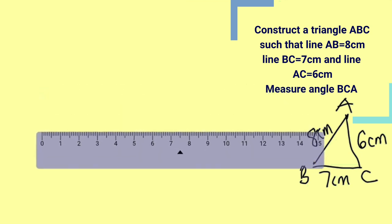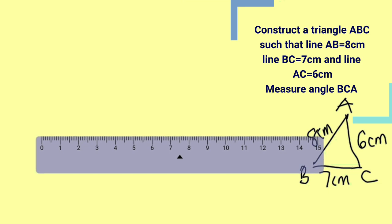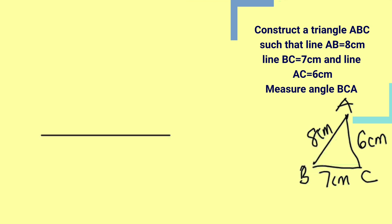So this is my ruler, let me measure 7cm, so this is 7cm, let me take away the ruler, let me label it as B and C.